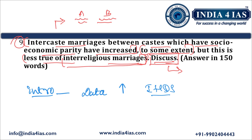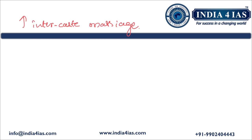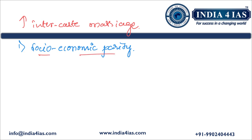This survey releases reports on various social aspects in India, including statistics on inter-caste and inter-religious marriages that we can quote as an introduction. After writing the introduction, we answer the first part — why there is an increasing trend of inter-caste marriages among socio-economically equal castes. First is socio-economic parity itself — there is a gradual increase especially among castes with similar socio-economic standing. For instance, marriages between upper-middle-class sections of different castes, where education, profession, and economic stability matter more than caste.